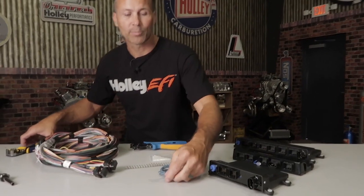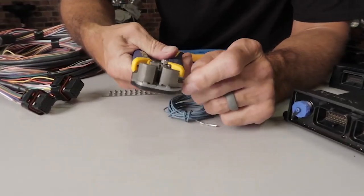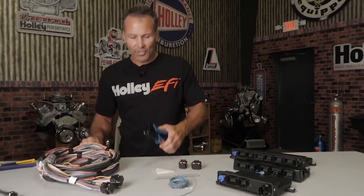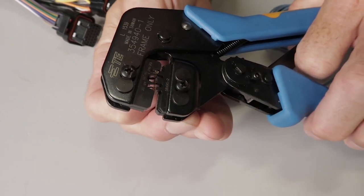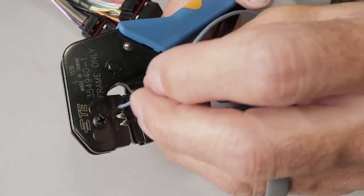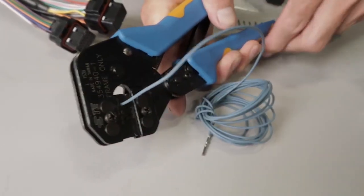Begin by stripping approximately 3 sixteenths of an inch or roughly 5 millimeters of insulation from your wire. Place your terminal into the appropriate slot found in the crimper. Once it's in place, lightly squeeze the terminal to hold it in place. Slide the wire into the terminal, then lock the tabs to keep the terminals in place.